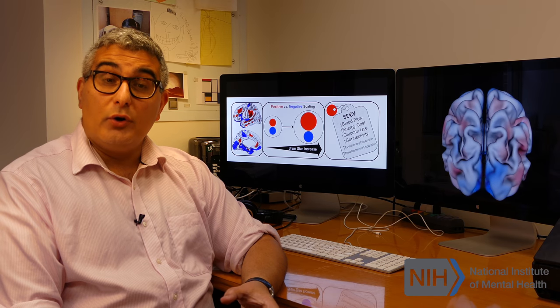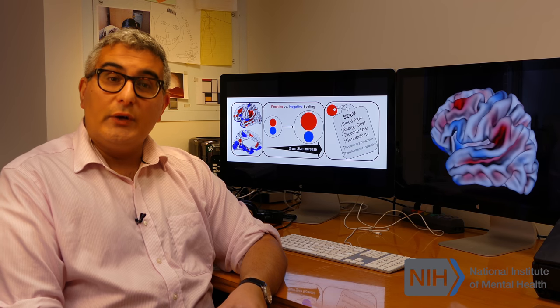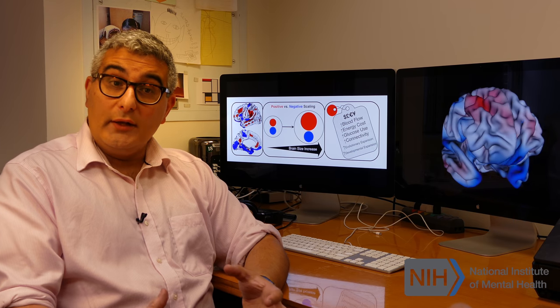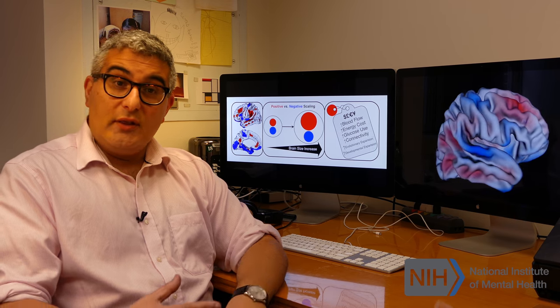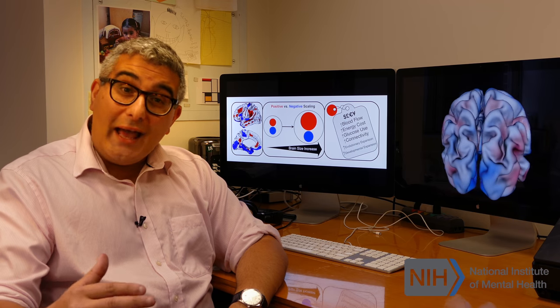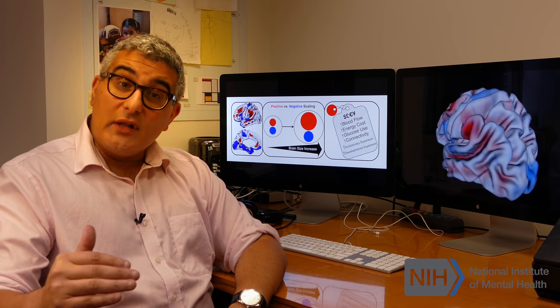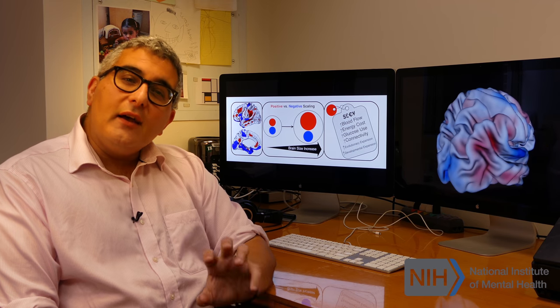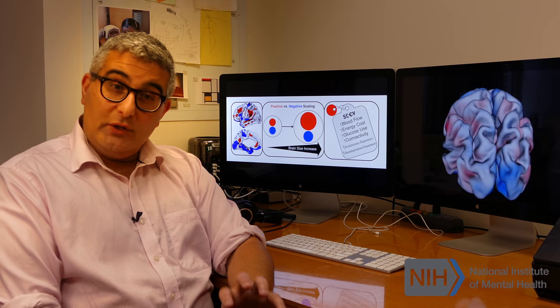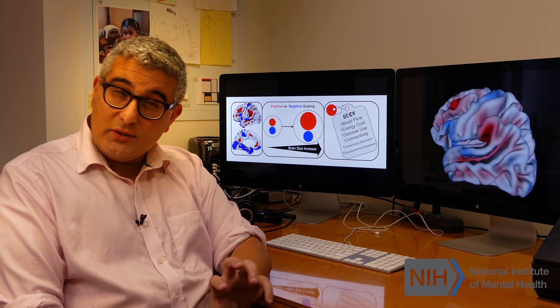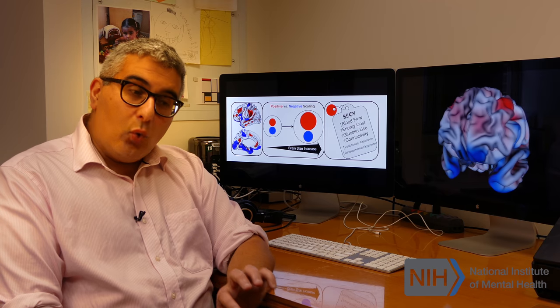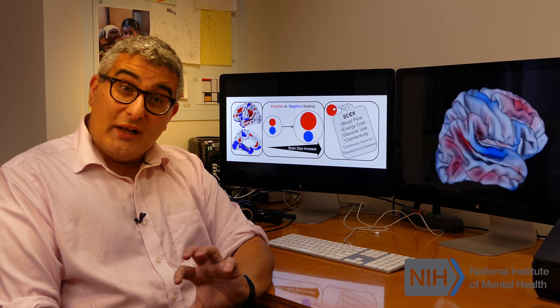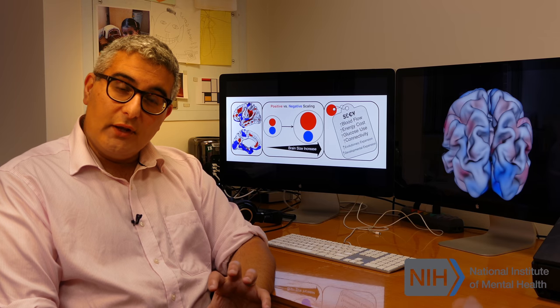So we already know from prior work that within humans, there's a subtle relationship between general cognitive ability or IQ and brain size, such that there's an association that larger brain individuals on average tend to have a slightly higher IQ than smaller brain individuals. To the extent that there are functional differences between large brains and small brains, that's not something our study directly addresses. What our study shows is that there are also consistent organizational changes between large brains and small brains.